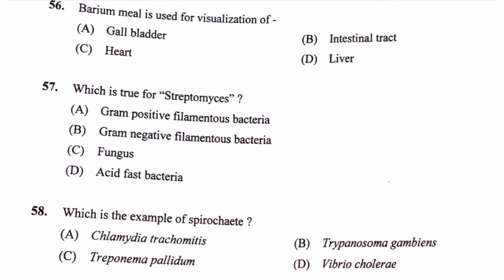Question number 57. Which is true for Streptomyces? Option A, Gram-positive filamentous bacteria; option B, Gram-negative filamentous bacteria; option C, Fungus; option D, Acid-fast bacteria. The correct answer is option A, Gram-positive filamentous bacteria.